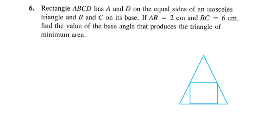So we have a rectangle ABCD. A and D are on the equal sides of the triangle. So here's A and here's D. B and C are on the base. So here's B and C. AB is 2 centimeters and BC is 6. So I'm going to put those numbers right there.